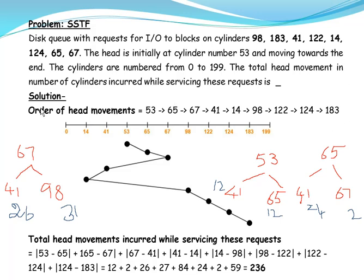We represent this order of head movements diagrammatically. The cylinders are numbered from 0 to 199. The sequence in which requests are processed is: 53, then 65, then 67, then 41, then 14, 98, 122, 124, and 183. Remember to maintain the relative distancing in the diagram.